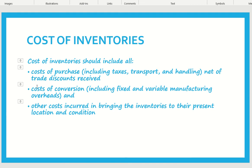Second, cost of conversion means when you buy raw materials, you bring them into your factory and process them into finished goods or semi-finished goods. Any cost incurred in the factory to convert these goods — whether fixed or variable manufacturing costs like labor wages, utility bills, factory rent or any other cost — will also be part of the cost of inventory.